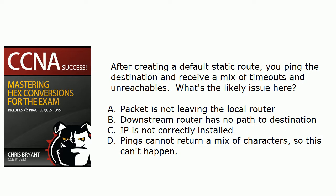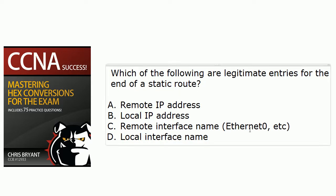After creating a default static route, you ping the destination that you specified and you get a mix of timeouts and unreachables for the ping result. What's the likely issue? That the packet isn't leaving the local router, that the downstream router has no path to the destination, that IP is not correctly installed, or is this a scenario that can't happen because pings can only return one character? We're going to see that on live Cisco routers here in just a moment.